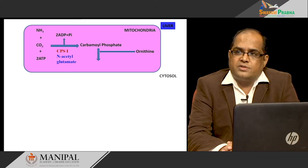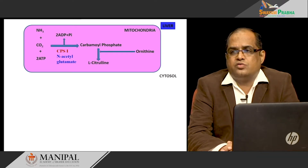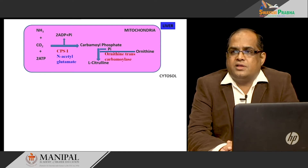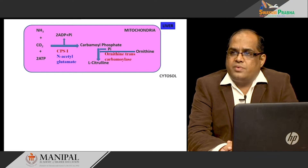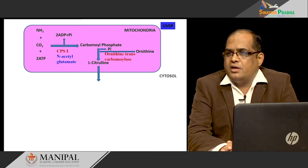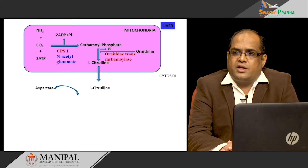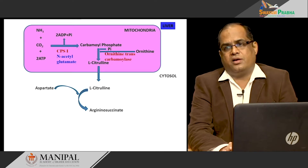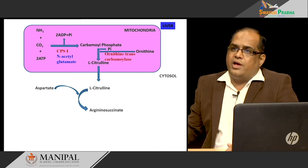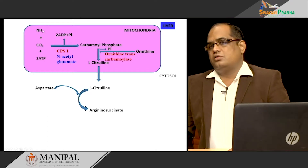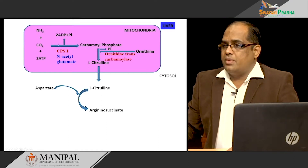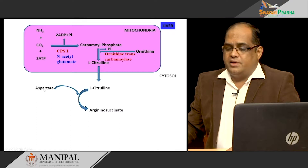In the next reaction, carbamyl phosphate combines with ornithine to form citrulline in the presence of the enzyme ornithine transcarbamylase. This citrulline comes out of the mitochondria into the cytosol. In the cytosol, it combines with aspartate. Aspartate is the donor of the second nitrogen of urea. The first donor of nitrogen is free ammonia from glutamine or glutamate by the action of glutamate dehydrogenase or glutaminase, and the second nitrogen comes from aspartate.